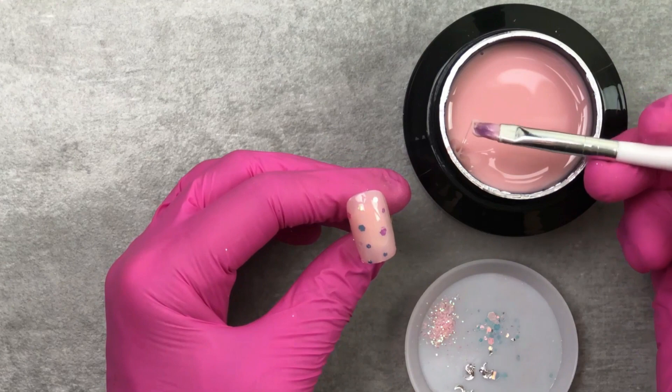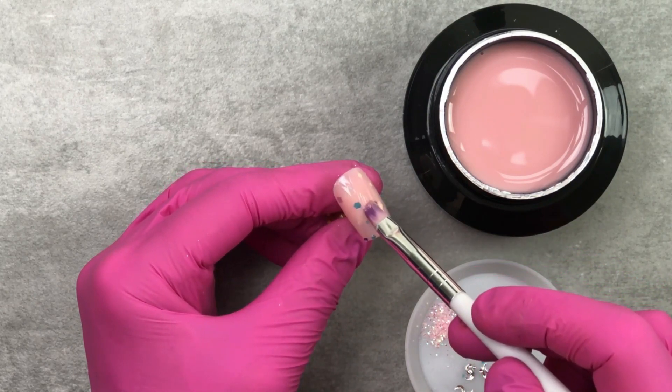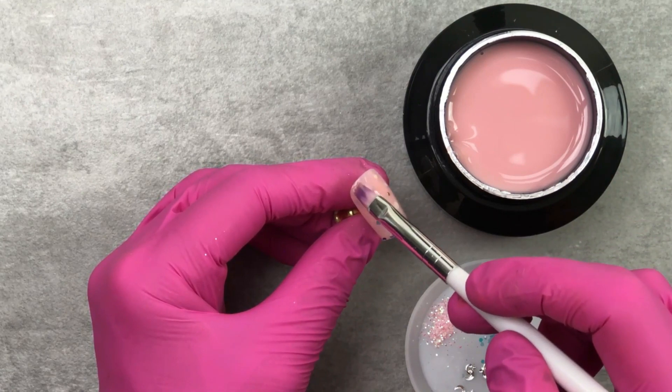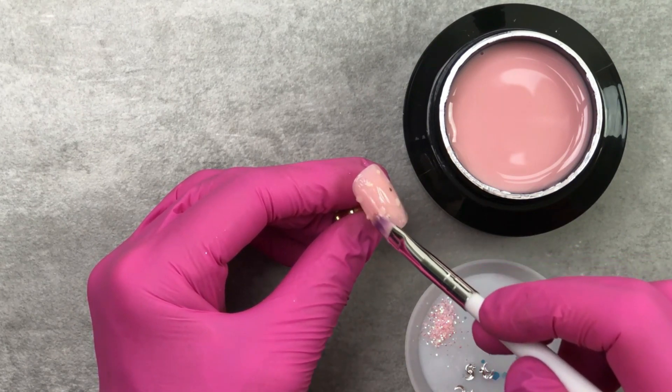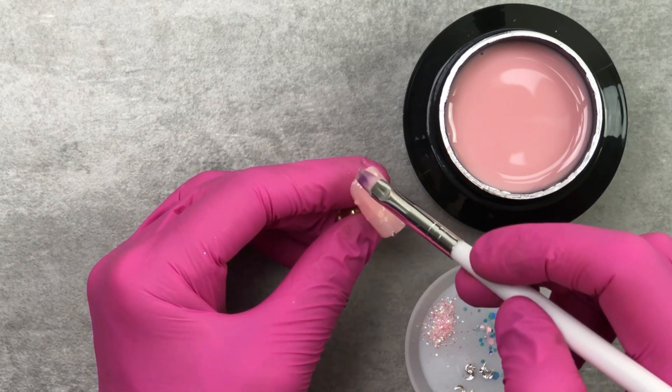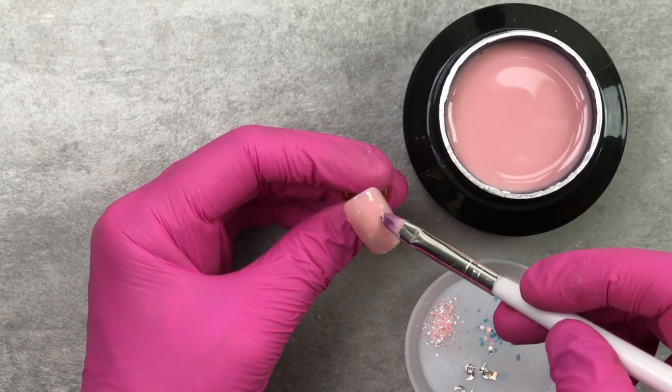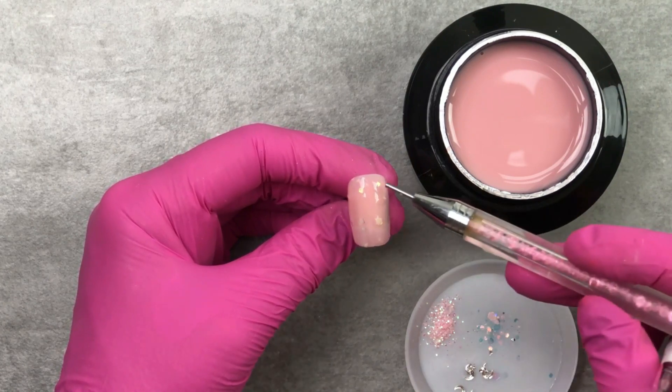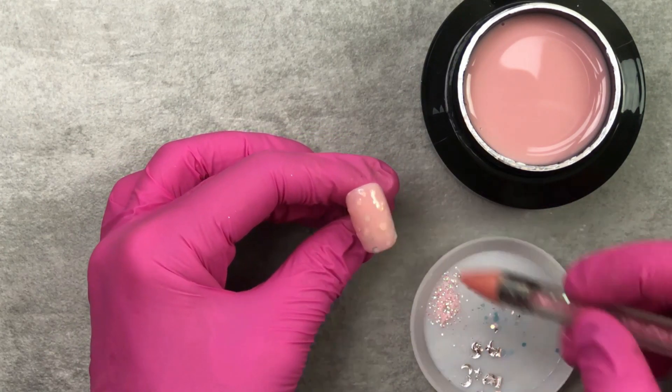Apply a light layer of the extension gel. And repeat. And it's going to make that glitter look like it just goes on forever in your nail. This look is so pretty. So you can do as many light layers as you like.